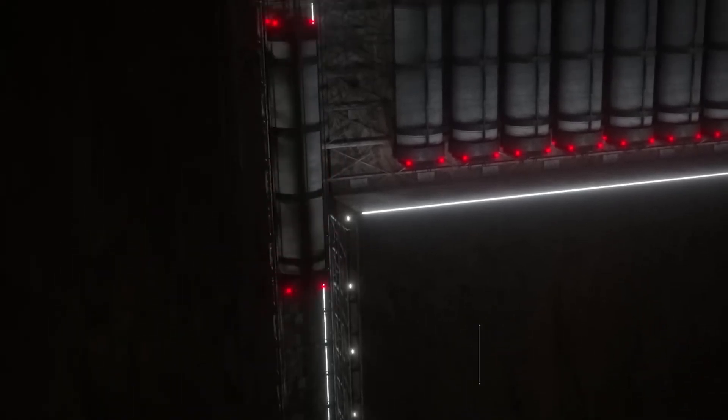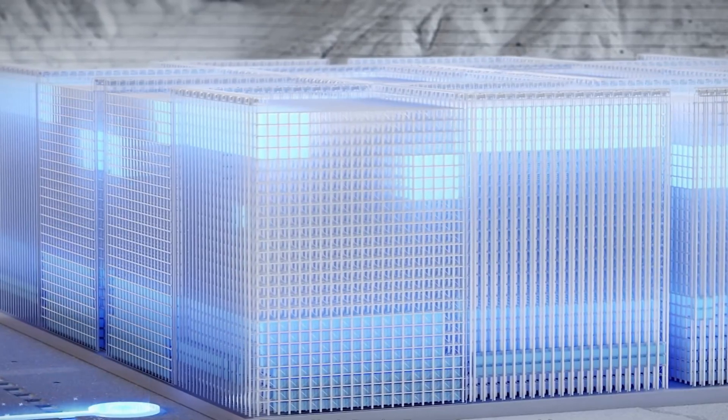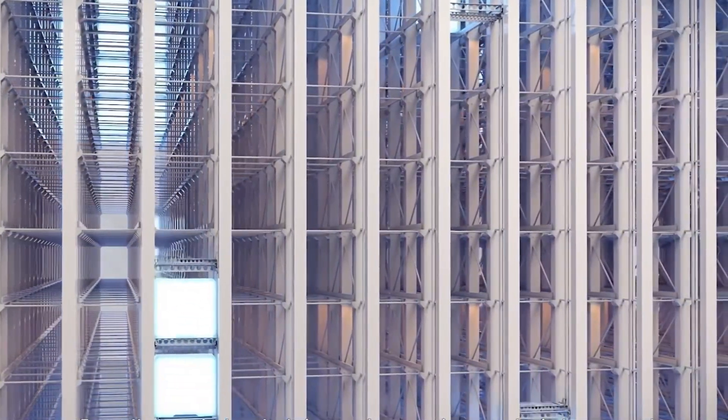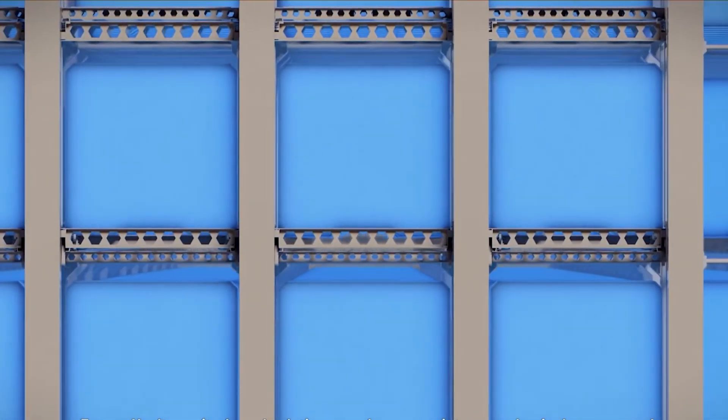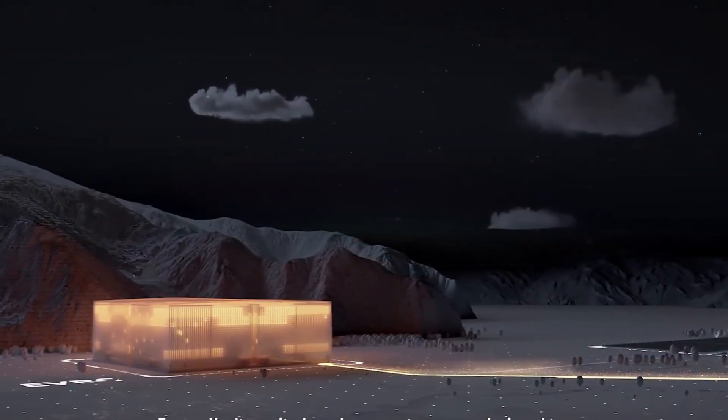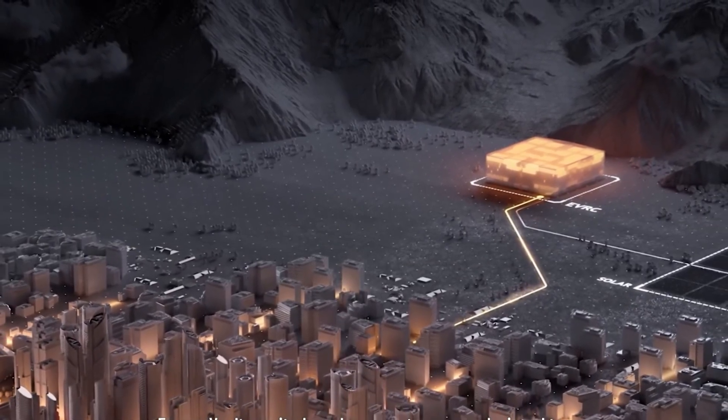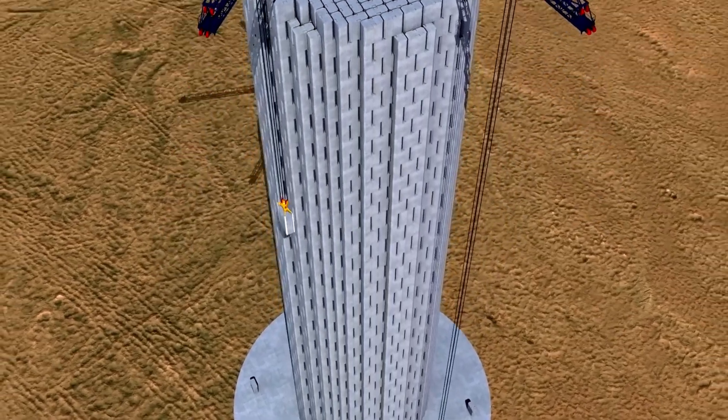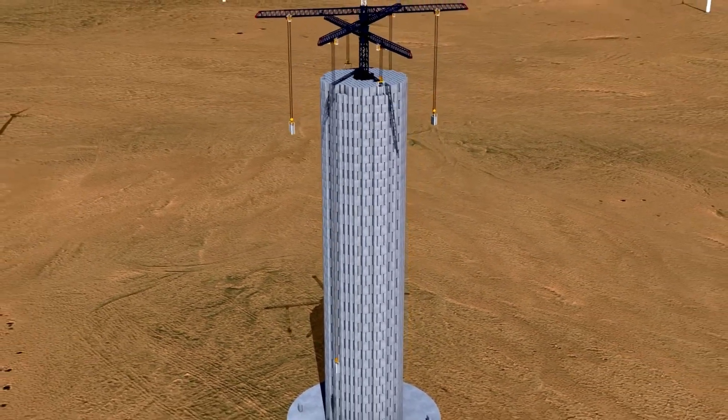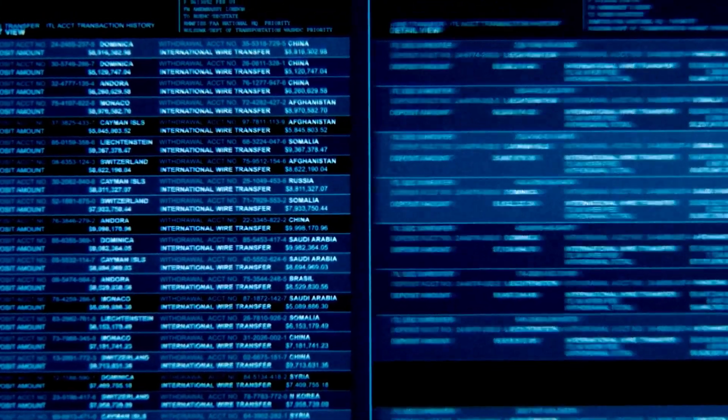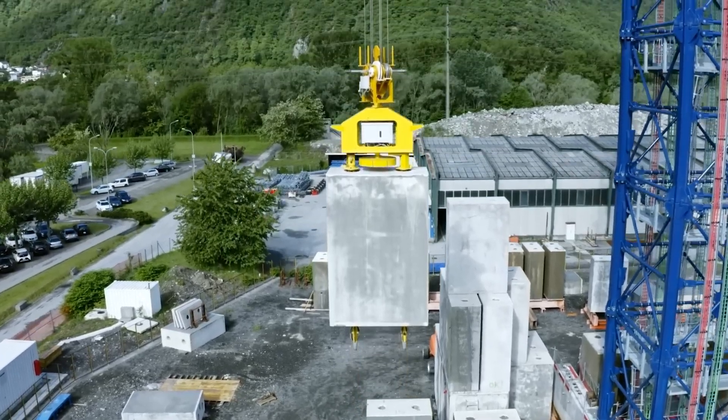Gravity Battery System is a novel and promising solution for energy storage that uses the force of gravity to store and generate electricity. It has several advantages over other types of energy storage systems, such as simplicity, scalability, flexibility, sustainability, and longevity. However, it also has some disadvantages and challenges, such as low energy density, high initial cost, land use, safety, and aesthetics. There are several companies and projects developing and testing gravity battery systems around the world with different designs and applications. Gravity Battery System is still in its early stages of development and needs more research and innovation to overcome its limitations and improve its performance. However, it has the potential to become a game-changer for the energy transition and the low-carbon economy.